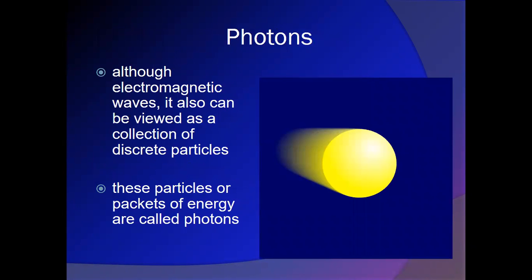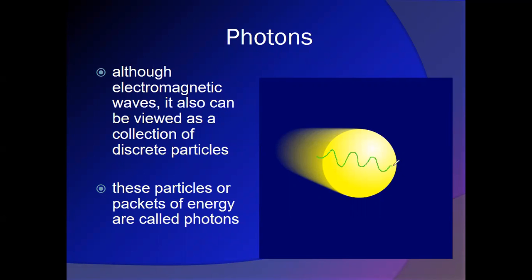Each photon, which is a particle of light, doesn't just act as an individual entity. It has momentum and energy. It also acts like an oscillating field, or a package of an oscillating field. So we can think of a big electromagnetic wave as being many, many photons superimposed on one another, which are these packages of electric and magnetic fields.